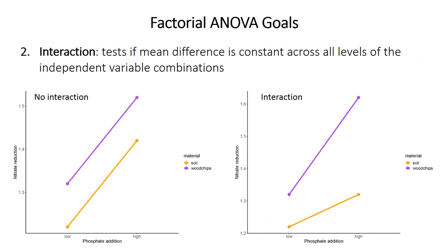The second thing assessed is whether there is a significant interaction between the factors — whether the mean difference is constant across all levels of the independent variables. The graph on the left shows no interaction: the shift from low to high phosphate causes the same change in nitrate regardless of material. However, the graph on the right shows an interaction: the effect of phosphate is much larger in wood chips than in soil, and the effect of switching to wood chips is much larger when phosphate is high than when it's low.